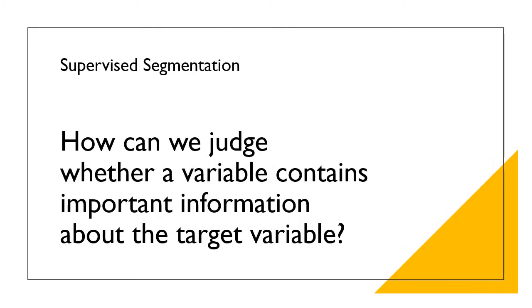As a reminder, a predictive model focuses on estimating the value of some particular target variable of interest. But how can we judge whether a variable contains important information about the target variable and how much? We'd like to automatically get a selection of the more informative variables with respect to the particular task at hand, namely predicting the value of the target variable. Even better, we might like to rank the variables by how good they are at predicting the value of the target.